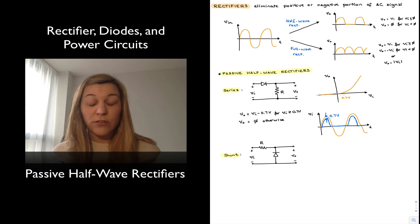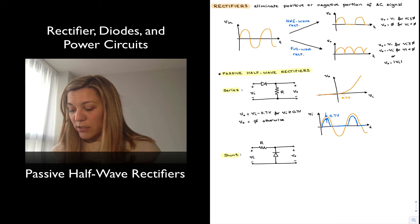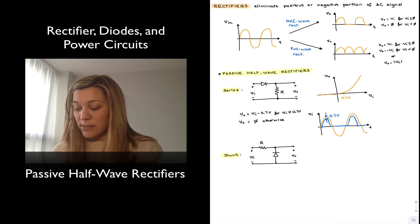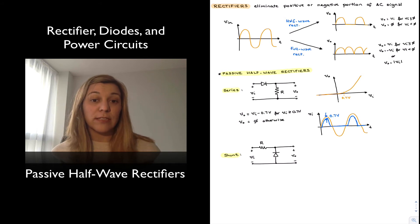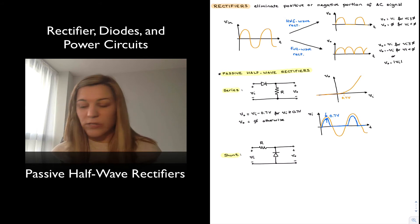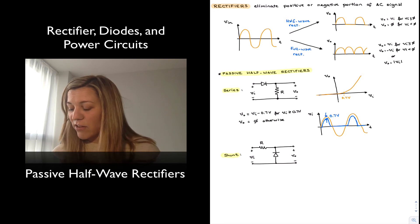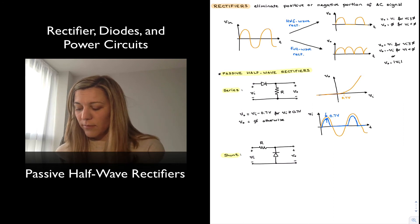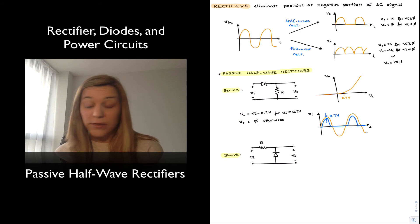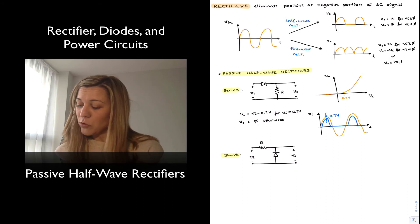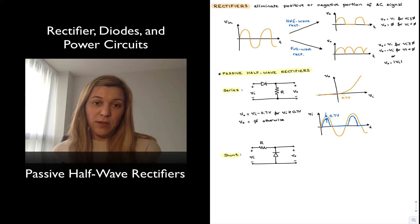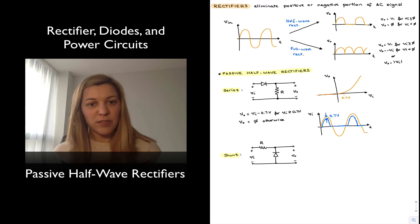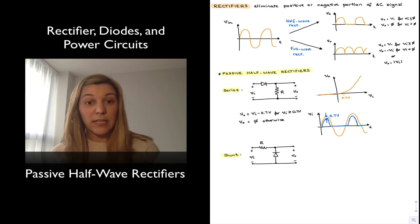Another potential candidate for those situations is the shunt version of the passive half-wave rectifier. Looking at the circuit, it's essentially the same as the series one, except now the diode is connected in shunt with the input signal as opposed to in series — the location of the resistor and the diode have been swapped. If my input signal is positive, the diode is going to be reverse biased, which means the output signal is going to be equal to the input signal, as long as we don't connect a load at the output. Let's imagine for now that we have an open circuit — a perfect load of infinity.